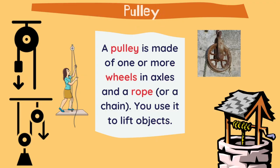A pulley comes from the verb 'pull,' and a pulley is made of one or more wheels and axles and a rope or a chain. You use it to lift objects. For example, with these pulleys we can take water out of a well. Lifts or elevators use a system of many pulleys, much more advanced with mechanical force as well. If we use two or more wheels in the pulley, it will be easier to lift the object than with just one wheel.